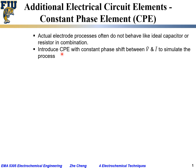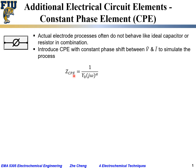Therefore, people find it useful to introduce the CPE, or Constant Phase Element, with a constant phase shift between AC voltage and AC current. This new type of circuit element called CPE is used to simulate the electrode process. The symbol looks something like this. The impedance for CPE is written as 1 over Y₀ times (jω) raised to the power of alpha.